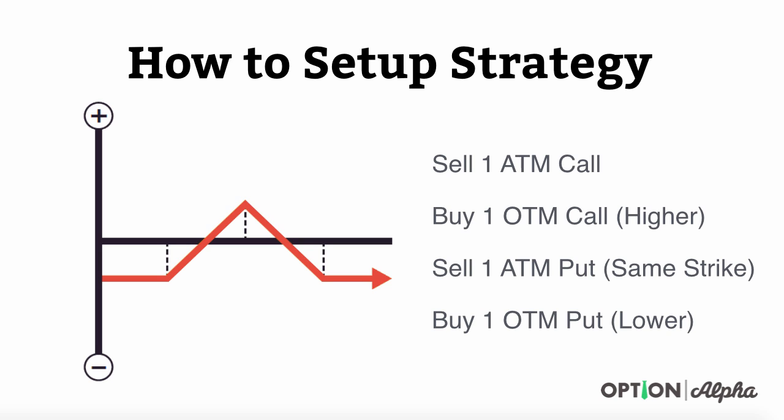How do you set up this strategy? First, you're going to sell an at-the-money call, then buy an out-of-the-money call at some higher strike price. You're also going to go across the option chain and sell an at-the-money put option at the exact same strike price as the call option that you sold. On the put side, we're going to go out-of-the-money even lower and buy an option for protection.